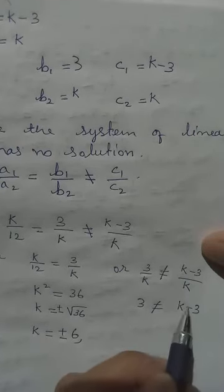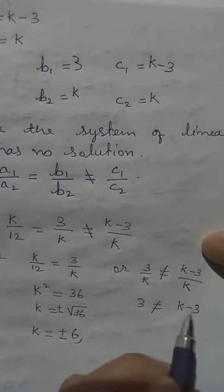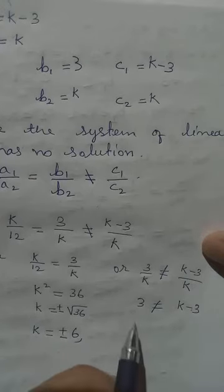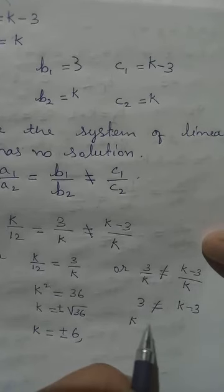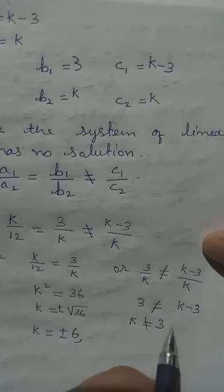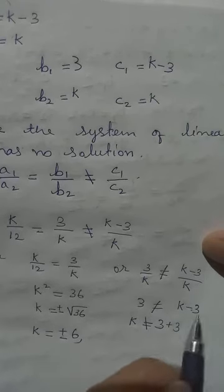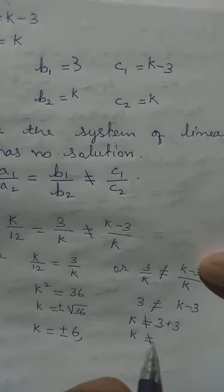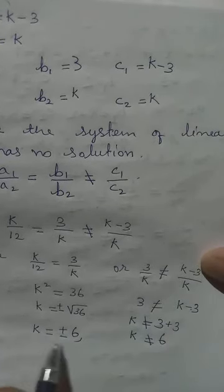Remember our aim is to calculate the value of k. This 3 has no k, so we can transpose it to the other side. This minus becomes plus, so 3 plus 3 equals 6.